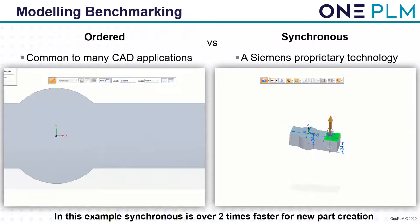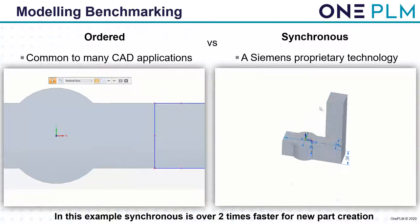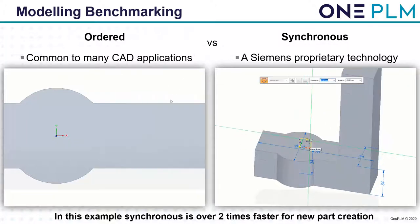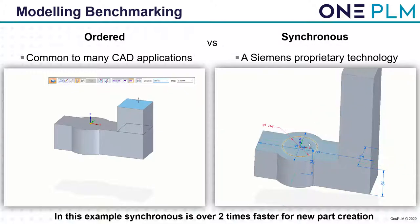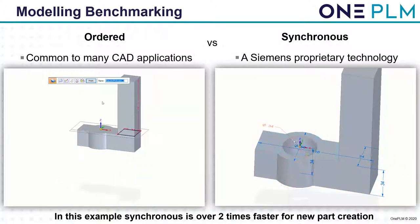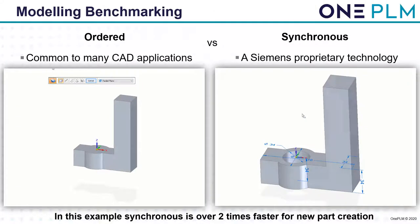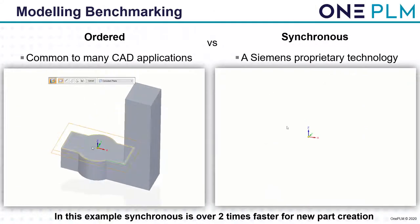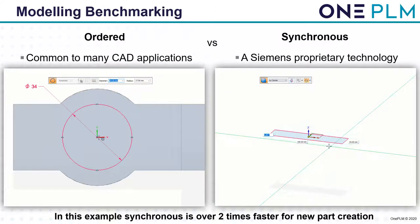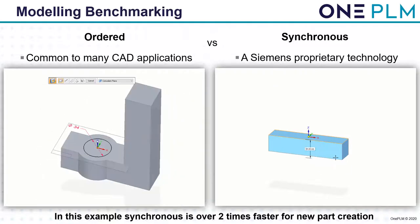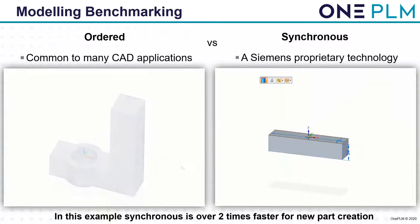We're now producing another sketch on the ordered side — a rectangle by two points with a quick dimension, very fast, but we're still ahead on the synchronous option on the right. The last step on the left is to put the cutout through, but it's all the time spent going in and out of the sketch, which is the same for all mainstream CAD systems that use history. We always have to rely on those sketches. We are at last done on the ordered one on the left.